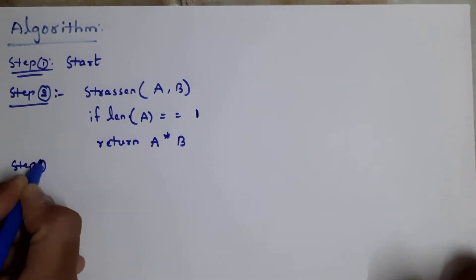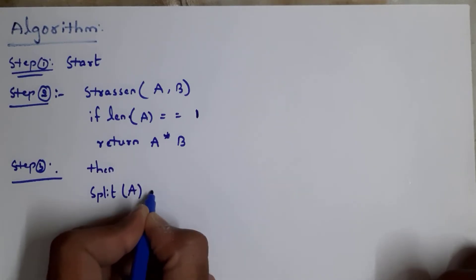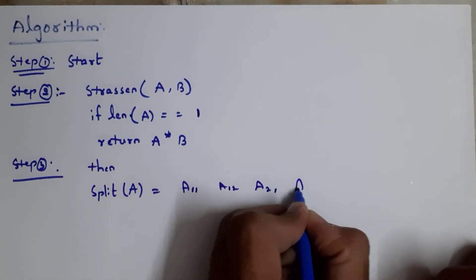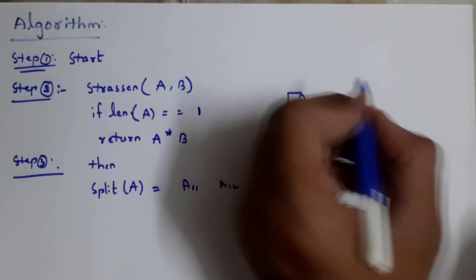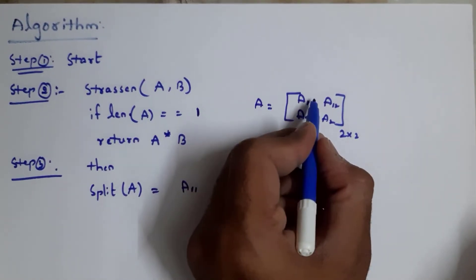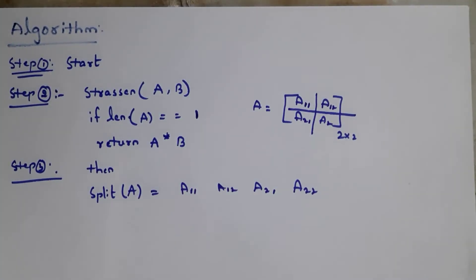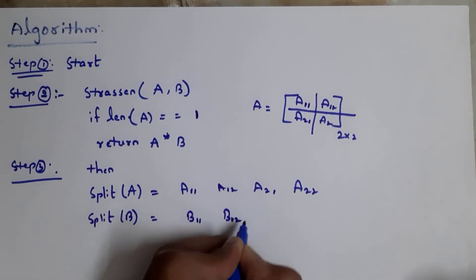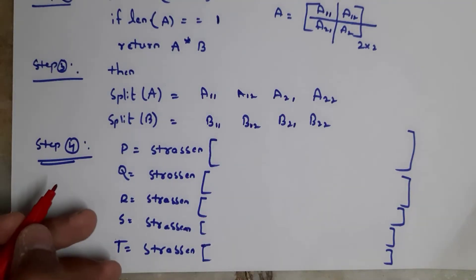Step 3: we split matrix A and matrix B. Split matrix A into four parts: A11, A12, A21, and A22. For example, this is a 2×2 matrix — it contains two rows and two columns: A11, A12, A21, and A22. I am splitting matrix A into these four parts. Next, split matrix B into four parts: B11, B12, B21, and B22.